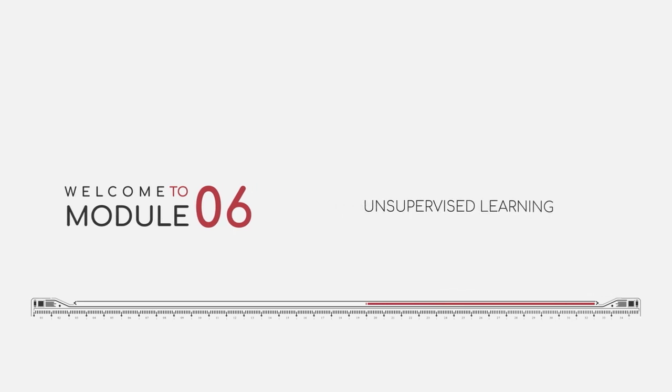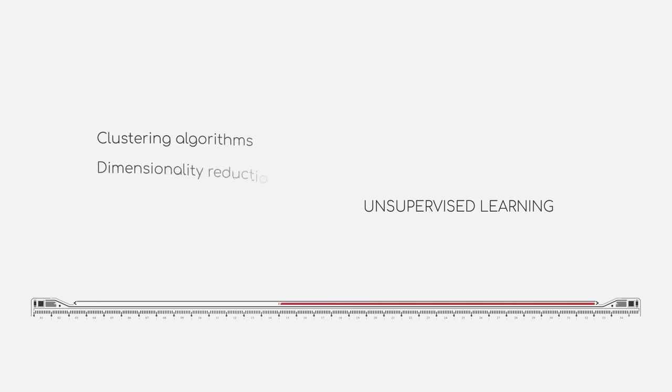Welcome to module 6 of this course. While previous modules have focused on the fundamental basics of machine learning, this module is one out of three modules that focuses on a specific algorithm class. In this module, we will talk mostly about algorithms in the unsupervised learning setting. To be more precise, you will learn about different clustering algorithms as well as dimensionality reduction methods.